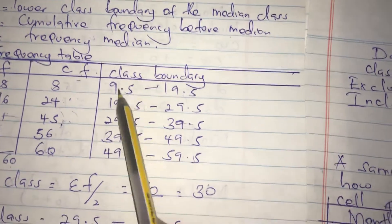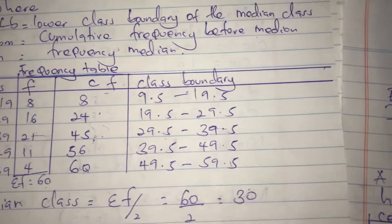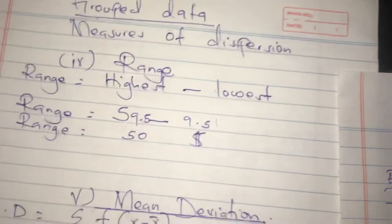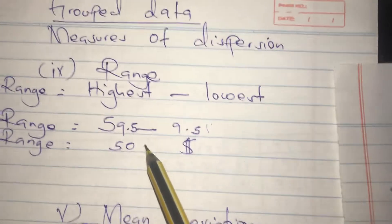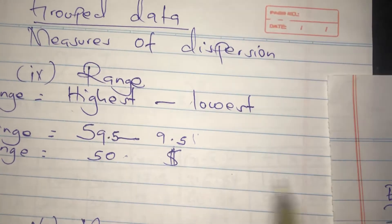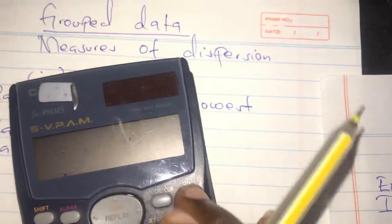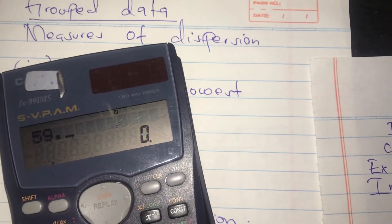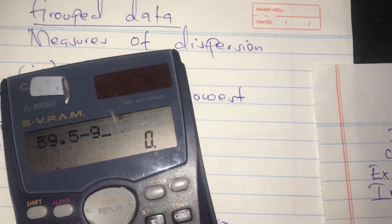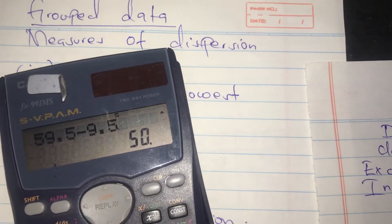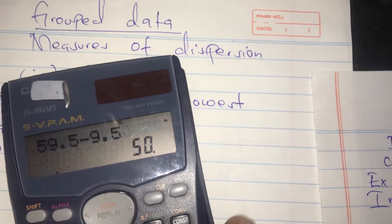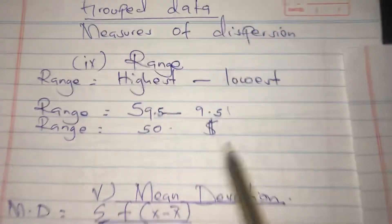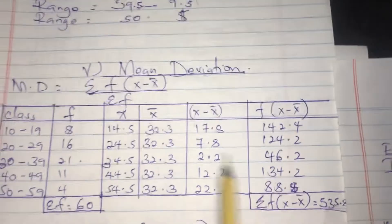So we subtract: 59.5 minus 9.5. Putting it in the calculator: 59.5 minus 9.5 gives us 50. So our range is 50 dollars. The next thing we are going to look at is mean deviation.